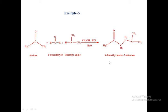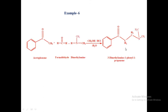Next, we change only the amine — from ammonia and methylamine to dimethylamine. Acetone is reacted with formaldehyde and dimethylamine in the presence of methyl alcohol as a solvent and hydrochloric acid to form 4-dimethylamino-2-butanone. The last example: acetophenone is reacted with formaldehyde and dimethylamine in the presence of methyl alcohol as a solvent and hydrochloric acid to give 3-dimethylamino-1-phenyl-1-propanone. This is about the Mannich reaction.